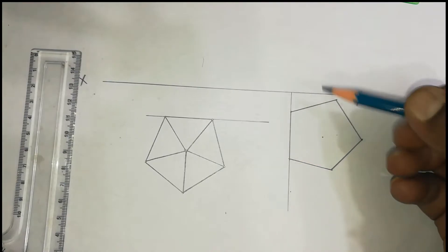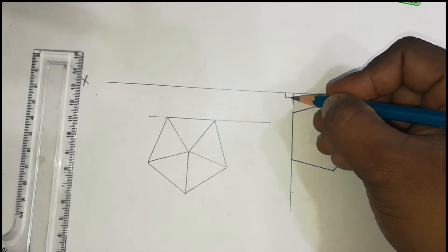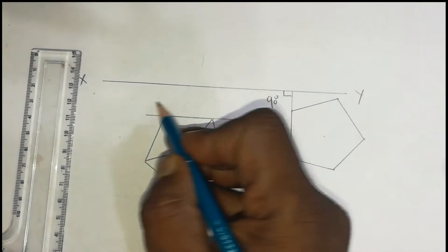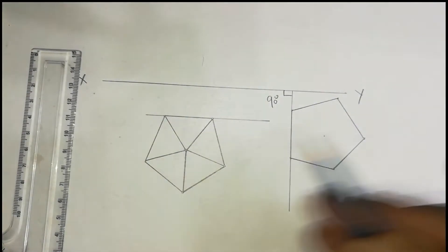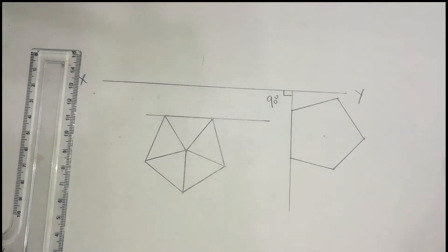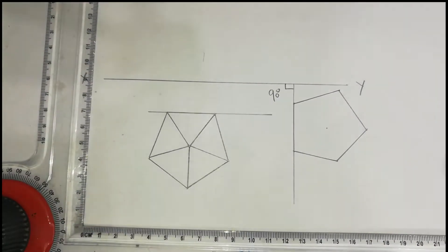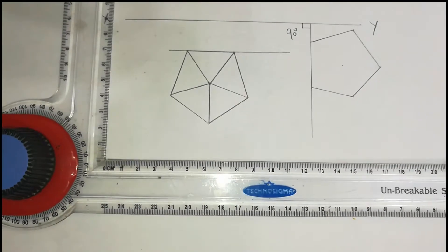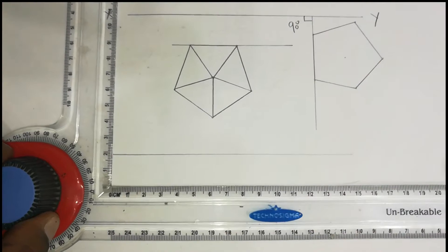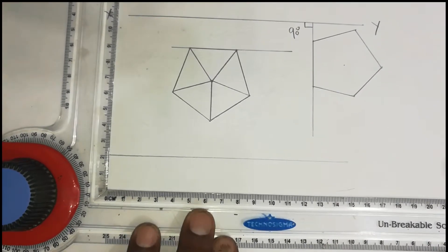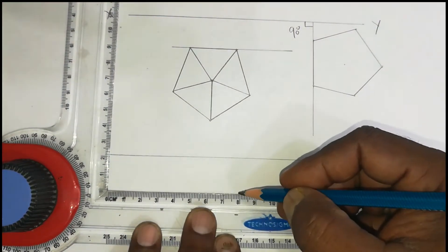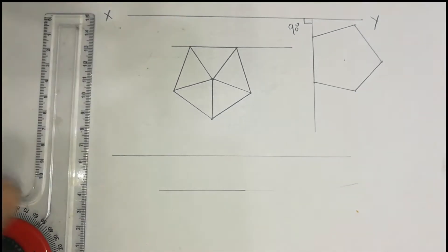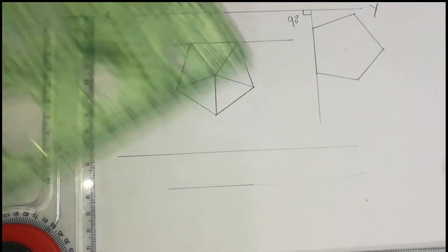Perpendicular to the XY line — that concept is there. It is 90 degrees. Parallel means you can draw a complete line along it. Pentagon is placed all over here, hexagon all over here. Draw the reference line called XY line. In the parallel condition, one side of your pentagon must coincide. Parallel to VP, parallel to XY line — one side of your hexagon must coincide.